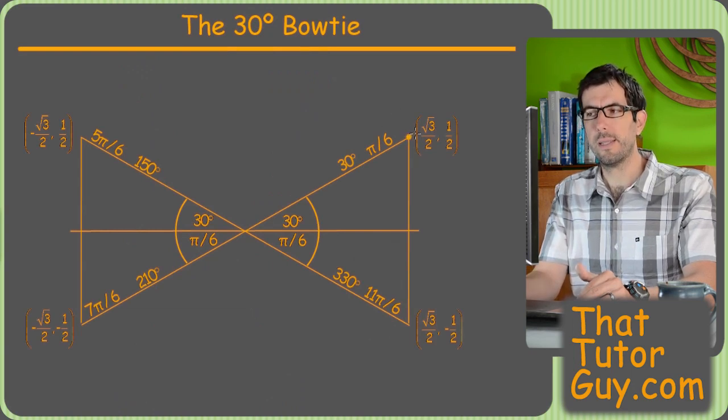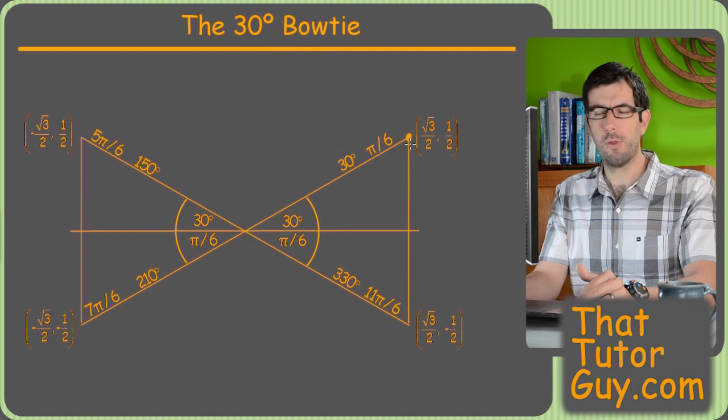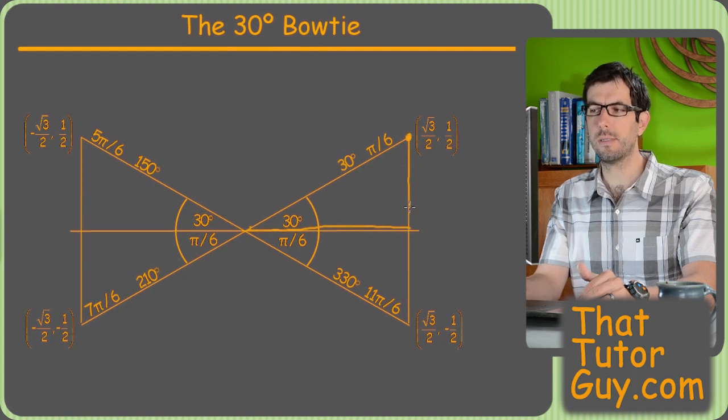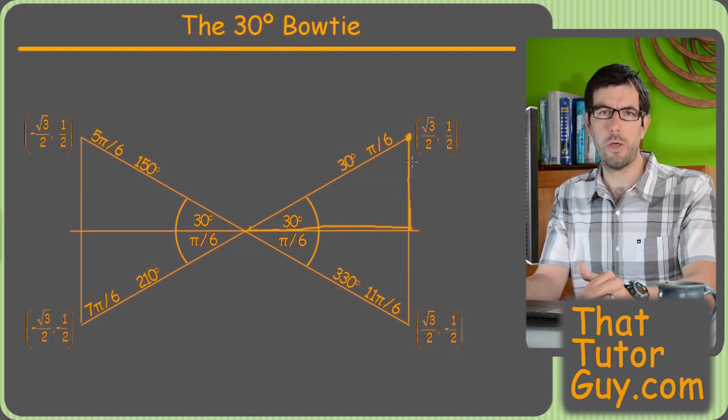But what I like to do is just look at it and say, if I look at that first corner of the bowtie, which one looks like it should be bigger? My x coordinate, which is this distance, or my y coordinate, which is this distance? Looks like y is smaller, right?